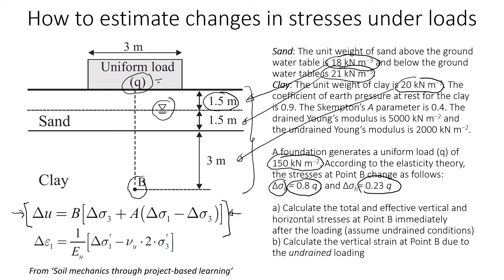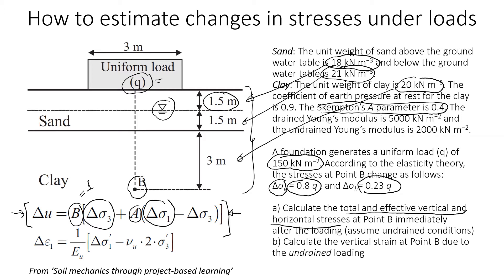To apply the formula, we need the changes in vertical stress, changes in horizontal stress, and parameters A and B. Parameter A is given as 0.4, and for a saturated soil, B is equal to 1. We need to calculate total and effective vertical and horizontal stresses at point B immediately after loading, and also the changes in vertical strain at point B immediately after load application.